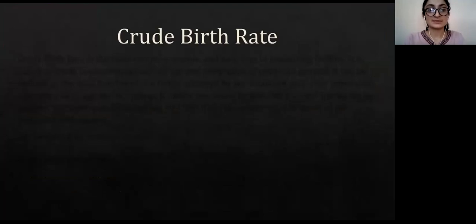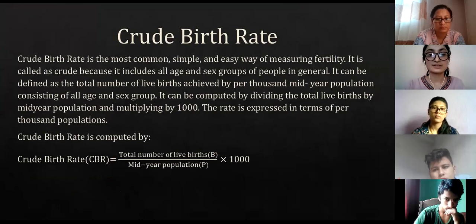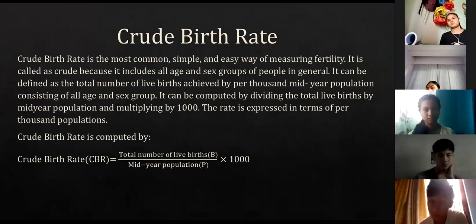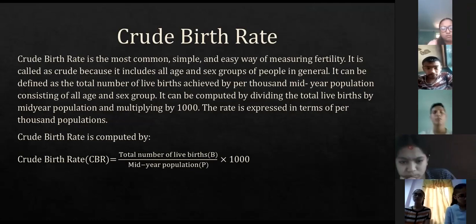Crude birth rate is the most common, simple, and easy way of measuring fertility. It is also called crude because it includes all age and sex groups of people in general. It can be defined as the total number of live births per 1,000 mid-year population, consisting of all age and sex groups. It can be computed by dividing the total live births by mid-year population and multiplying by 1,000. The formula of crude birth rate is: total number of live births divided by mid-year population, multiplied by 1,000.